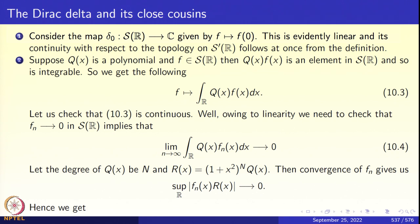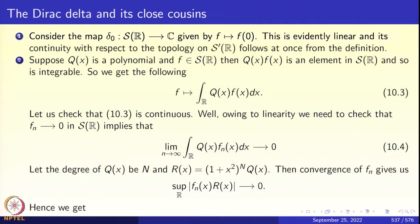Next example: take a fixed polynomial q(x). Take a rapidly decreasing function f in S(R) and multiply it by q(x). The product q(x)·f(x) is again rapidly decreasing, so it remains in S(R) and is integrable. Define the map f ↦ ∫ q(x)f(x) dx. To check continuity, note that by linearity it suffices to check continuity at the origin, i.e., we need to show that ∫ q(x)fₙ(x) dx → 0 when fₙ → 0 in S(R). This is display 10.4.